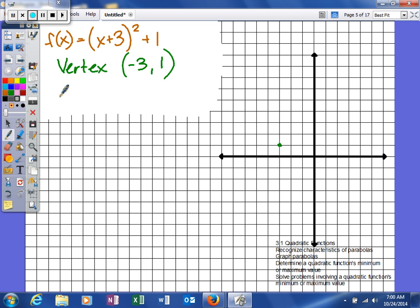Remember our axis of symmetry? It's going to be x is equal to negative 3. So that is the vertical line that's going to pass right down through your vertex. And the good news is it's going to basically divide your graph into two nice little equal parts for us.